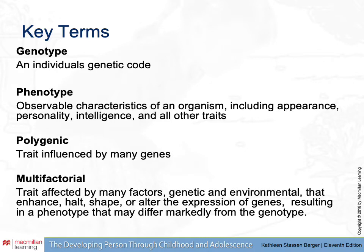Some of the key terms I'd like you to keep in mind are genotype and phenotype. A genotype is the individual's genetic code — it's all of the genetic information that you have stored in your cells. Your phenotype is the observable characteristics; it's the expression of the genotype in the real world. There are often differences between what the genotype codes for and how a person's phenotype presents, and those differences can come from many sources.